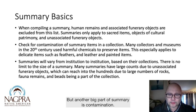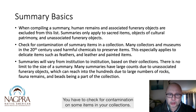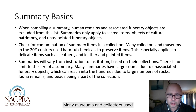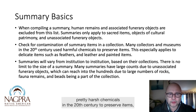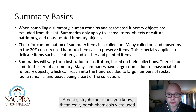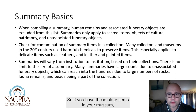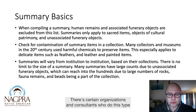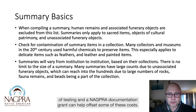Another big part of summaries is contamination. You have to check for contamination on summary items in your collections. Many museums and collectors used pretty harsh chemicals in the 20th century to preserve items, especially delicate items such as feathers, leather, and painted items — arsenic, strychnine, and other really harsh chemicals. So if you have older items in your museum, it's very advisable to get them tested immediately. There are organizations and consultants who do this type of testing, and a NAGPRA documentation grant can help offset some of these costs.